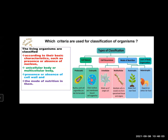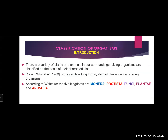The fourth criterion is mode of nutrition — autotrophs. We have studied about autotrophs and heterotrophs. Autotrophs are the plants which can make their own food with the help of photosynthesis. They are called autotrophs. Heterotrophs depend on some other plant or some other organism; they cannot prepare their own food, so they are included in heterotrophs. These are the few criteria which were considered while doing the classification of organisms.